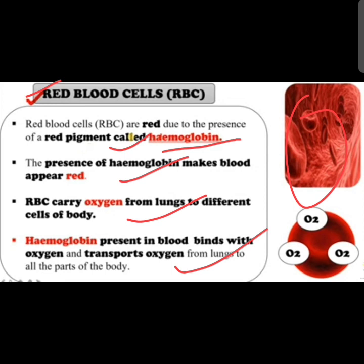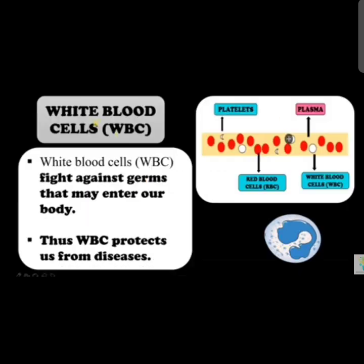White blood cells fight against germs that may enter our body. They fight against infection and thus protect us from diseases. So the main function of white blood cells is to fight against germs and protect our body from certain diseases.